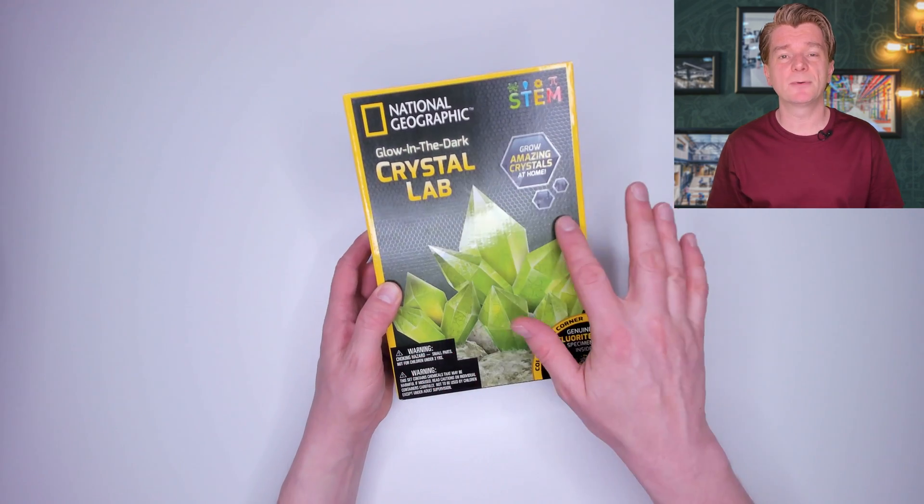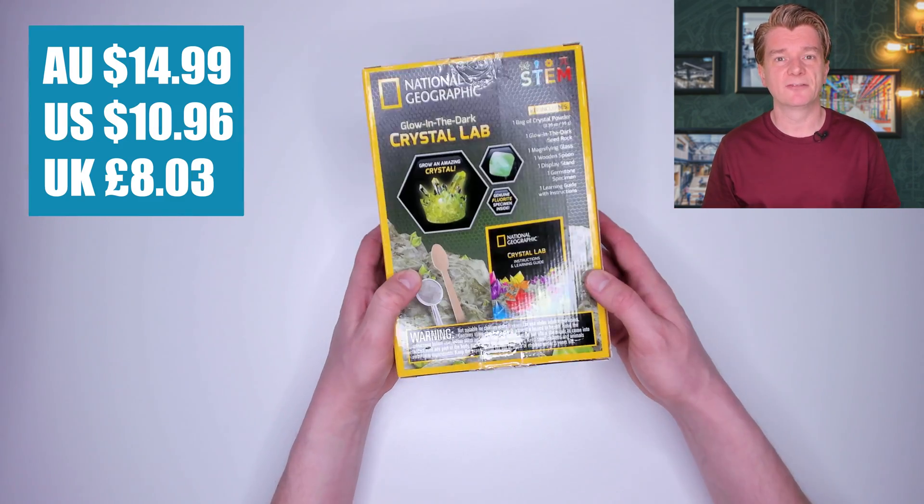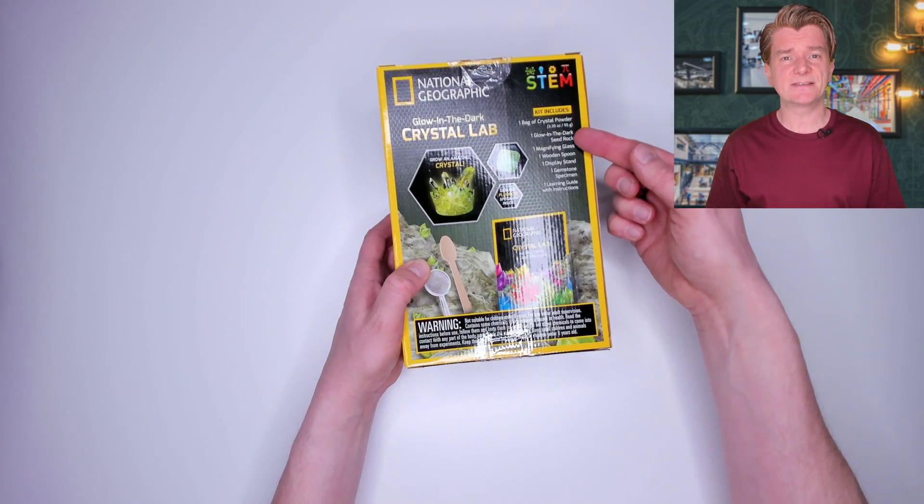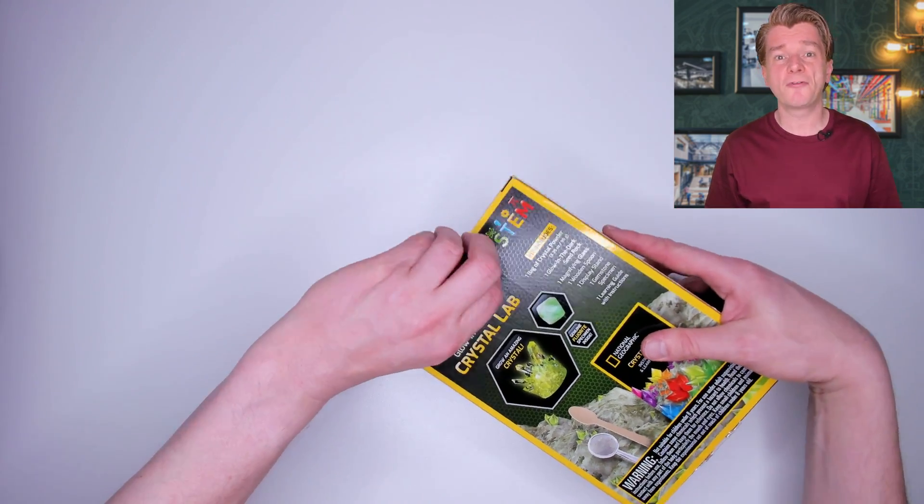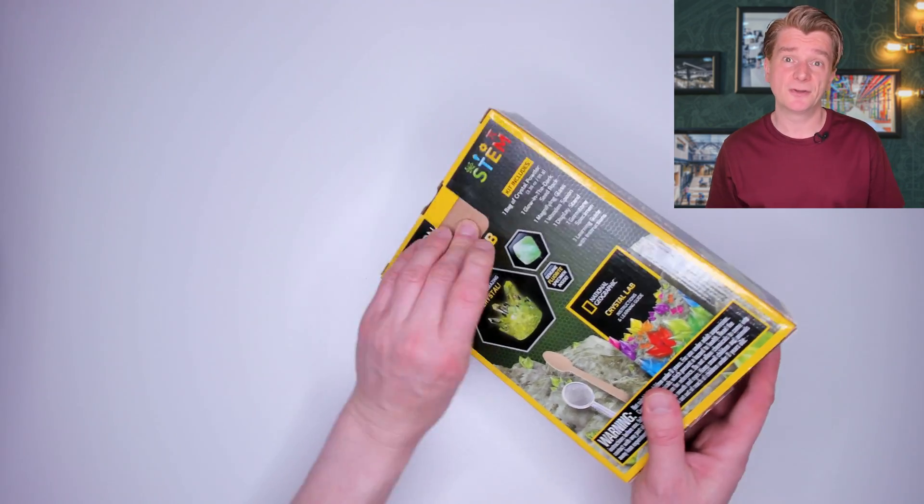First is the National Geographic Glow in the Dark Crystal Lab. It cost me $14.99 from the Audi Special Buyer of Science Toys earlier this year. It says on the back that there is a genuine fluorite specimen inside and it shows this amazing glow in the dark crystal that we're going to grow. Looks cool.